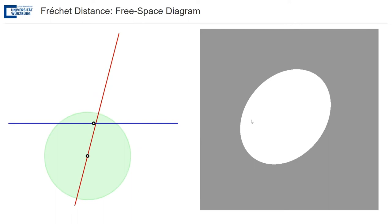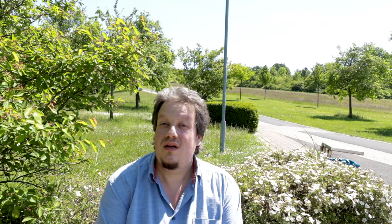And now my question to you is how does this parameter space tell me if the Fréchet distance is at most epsilon or not. Think about it.